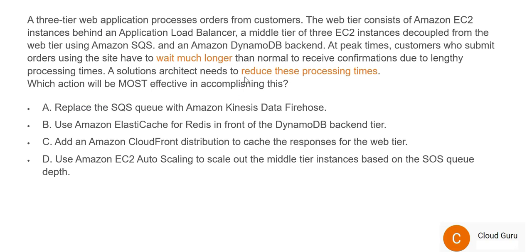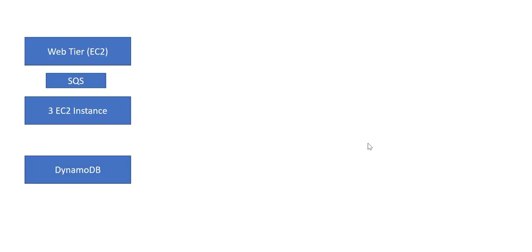What the question is saying is that the pain point is that at peak times, when the load is very high — for example, like Amazon.com during peak season — customers who submit orders have to wait much longer. You have been asked to reduce these processing times. During peak time, a lot of orders come in, the web tier receives a lot of requests, all of these go to SQS, then to the three EC2 instances and to DynamoDB — and this is taking a lot of time to process.